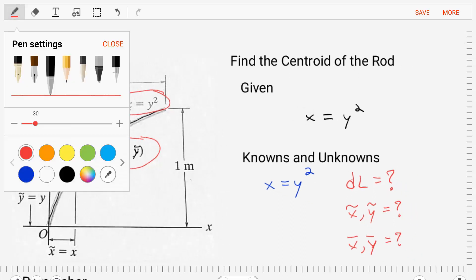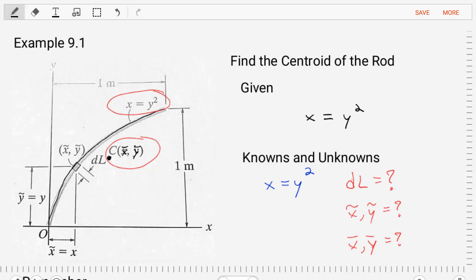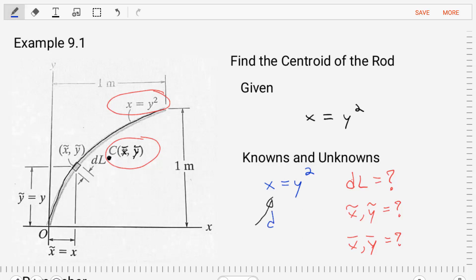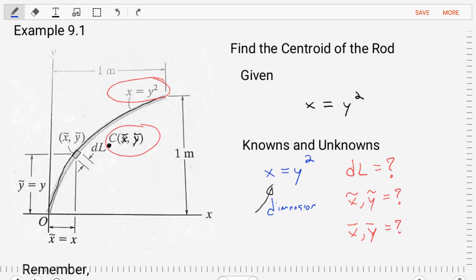The first thing we want to do is list our knowns and unknowns. We know the equation for the line. We also are given some dimensions for the line, for where it ends in the x and y position. It's one meter and one meter as its final position. The unknowns that we have for this problem are everything that we need to find the centroid.